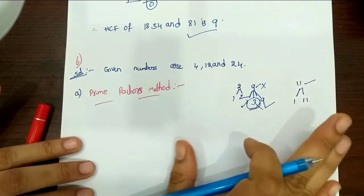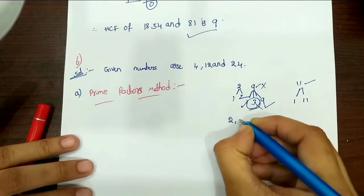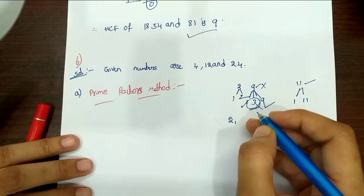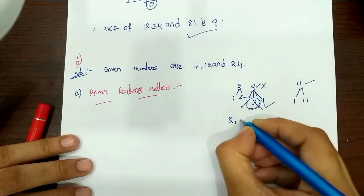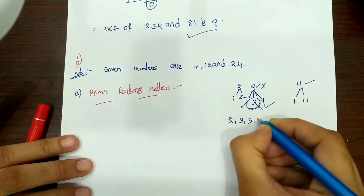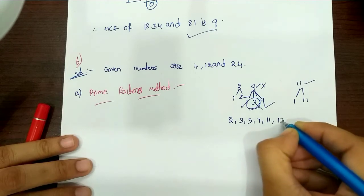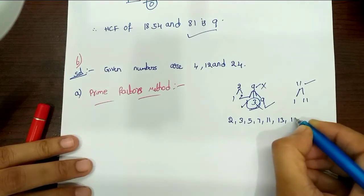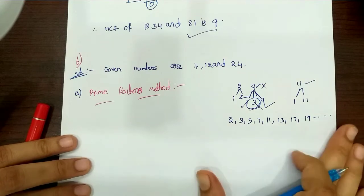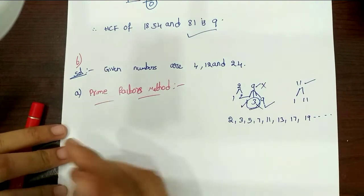So this is prime numbers. Prime numbers are starting at 2 from start. What is a prime number? 2, 3, next 5, 7, next 9, next 11, 13, and next is 17, 19, and so on. So this is prime numbers.